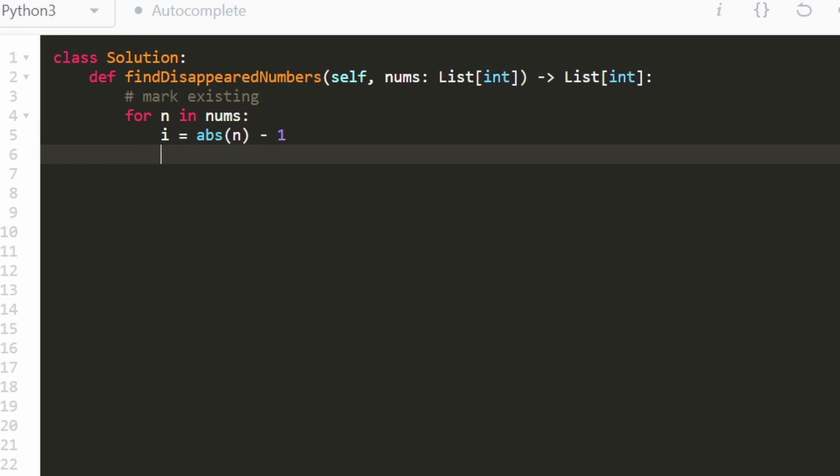And to our index, so nums of i, we want to set this to be negative, but it could already be negative. So we're going to take the absolute value of whatever it happens to be and then multiply it by negative one. So that's the first phase. Now that we're done with this, we know which value exists in our array and which values don't exist.